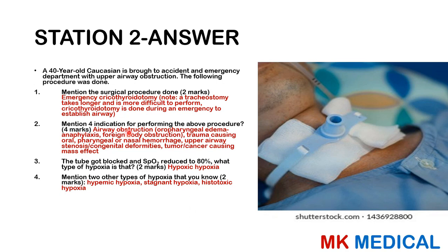Indications include upper airway obstruction due to oropharyngeal edema as in anaphylaxis, foreign body obstruction, trauma causing oropharyngeal or nasal hemorrhage, upper airway stenosis or congenital deformities, and tumors or cancers causing mass effect. This type of hypoxia is hypoxic hypoxia. The other types are hypemic hypoxia, stagnant hypoxia, and histotoxic hypoxia. This is interesting physiology worth reading up on in more detail.